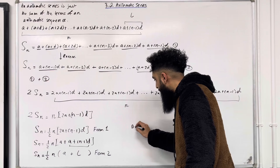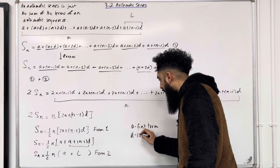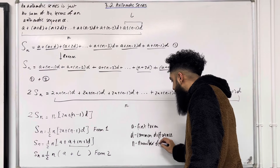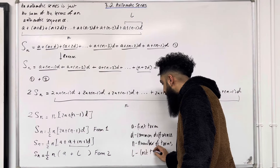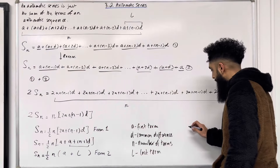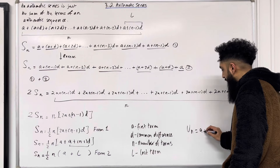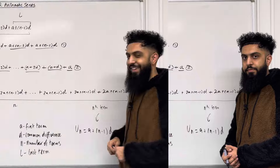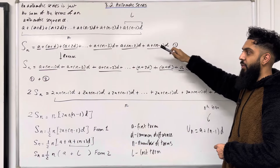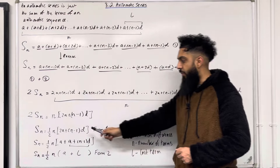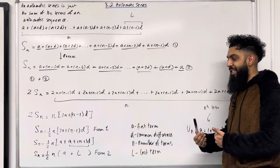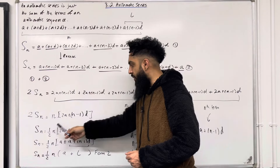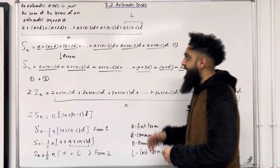A represents the first term, D represents the common difference, N is the number of terms, and L is the last term. The Nth term U_n of an arithmetic series is A plus N minus 1 times D. The proof of the sum of the first N terms is examinable — you could be asked to prove either form of the S_n formula.